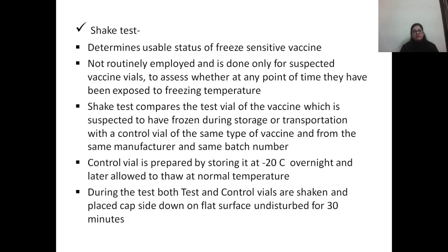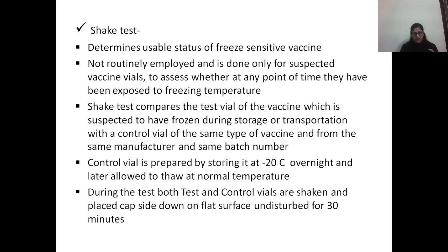The shake test determines the usable status of freeze-sensitive vaccines. It is not routinely employed and is done only for suspected vaccine vials to assess whether they have been exposed to freezing temperature. The shake test compares the test vial — suspected to have frozen during storage or transportation — with a control vial of the same type, same manufacturer, and same batch number. The control vial is prepared by storing at minus 20°C overnight, then thawed at normal temperature. Both vials are then shaken and placed cap-side down on a flat surface for 30 minutes.